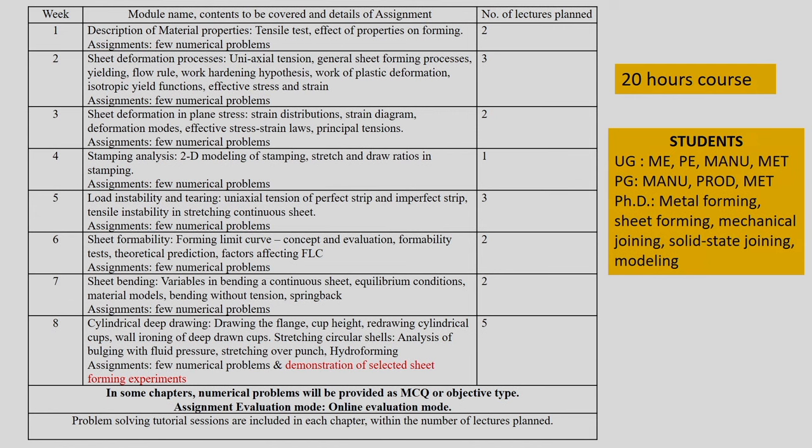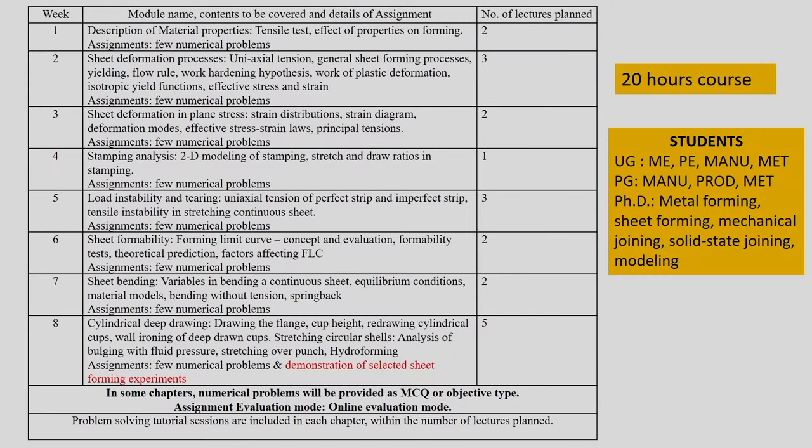The next chapter would be on basics of plasticity, which is generally written as sheet deformation processes. We are going to discuss biaxial tension, general sheet forming processes, yield functions, and the relationship between effective stress and effective strain, with problems to be solved. Then we are going to discuss important aspects of sheet deformation in plane stress — strain distribution, strain diagrams, principal tension, and effective stress-strain laws.